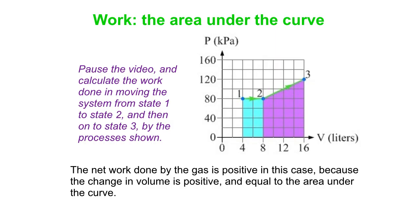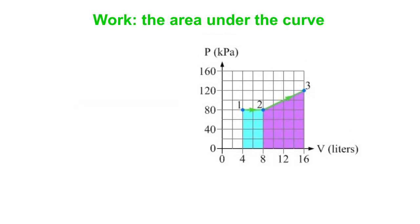Can I get the work done going from 1 to 2, then from 2 to 3, then the network? So what do you get? Note the units here are the kilopascal liter, which sounds weird, but it turns out to be a joule.